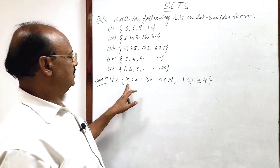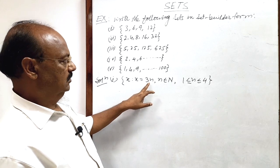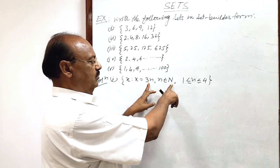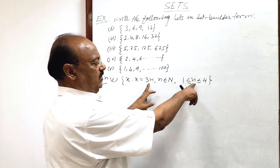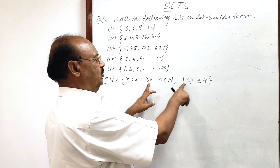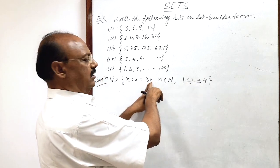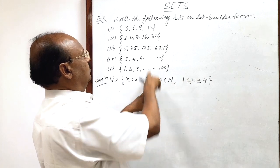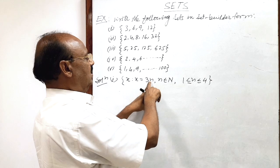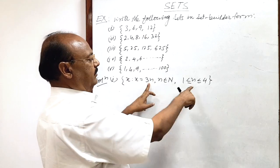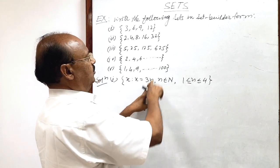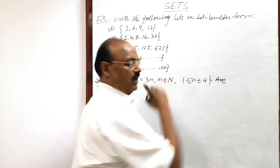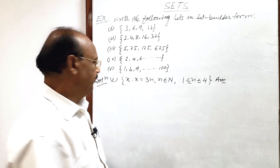You see, here x is 3n and n is a member of the natural numbers, and n lies between 1 and 4. So if n is 1, this is 3 into 1, that is 3. If n is 2, then 3 into 2 is 6. If n is 3, then 3 into 3 is 9. If n is 4, then 3 into 4 is 12. So this is the answer for the first part, very clear.